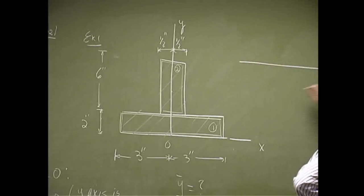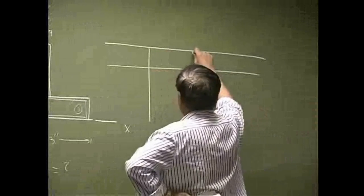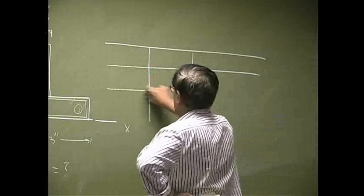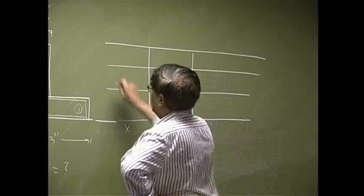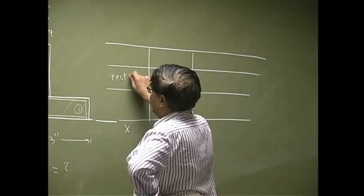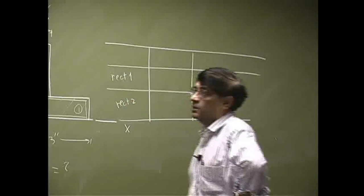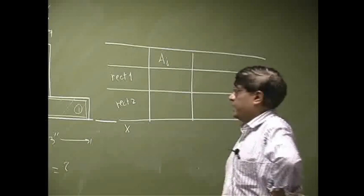And let's make a small table. So this one has only two components. So we call this as rectangle 1. This one, we call this as rectangle 2. Then the first column is the areas.